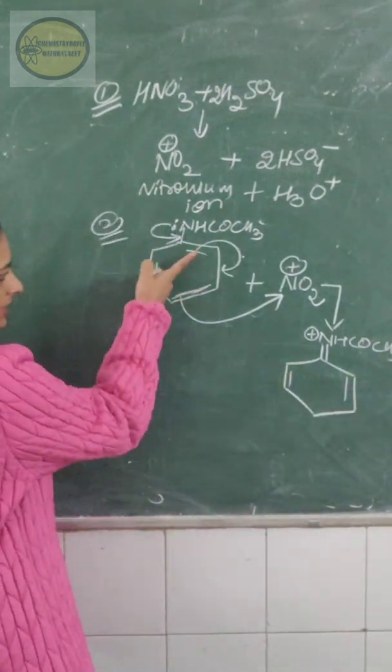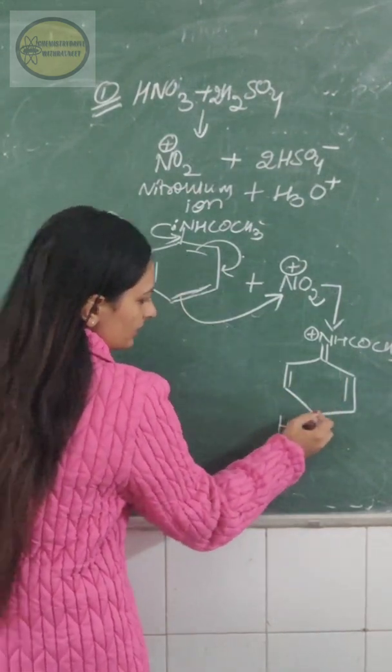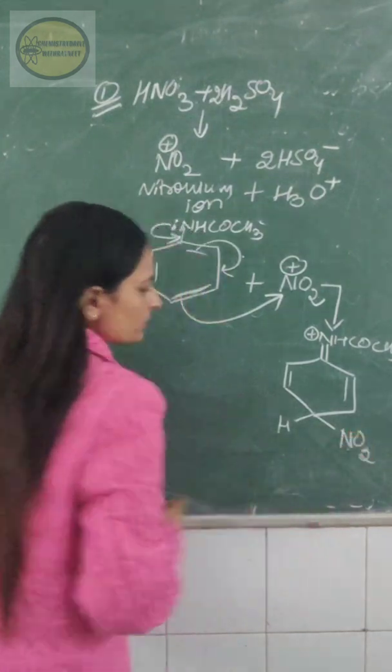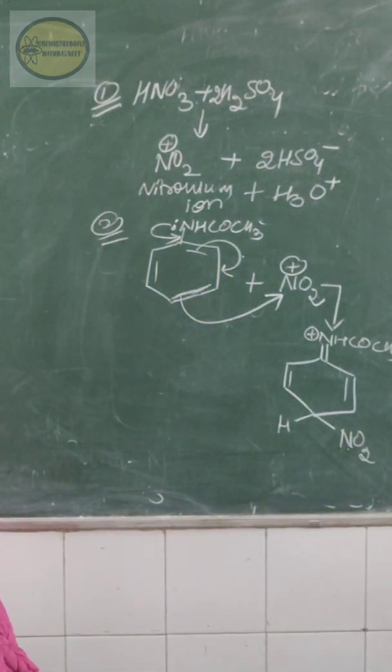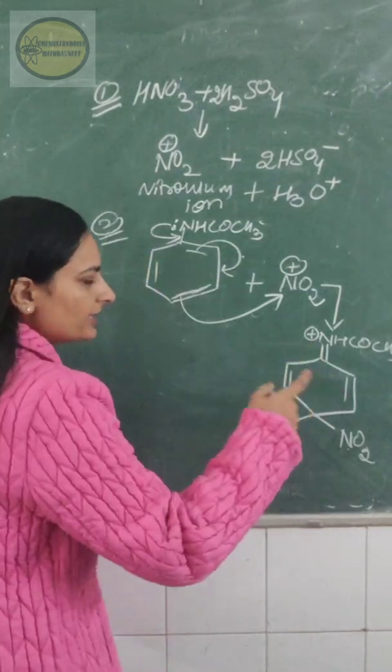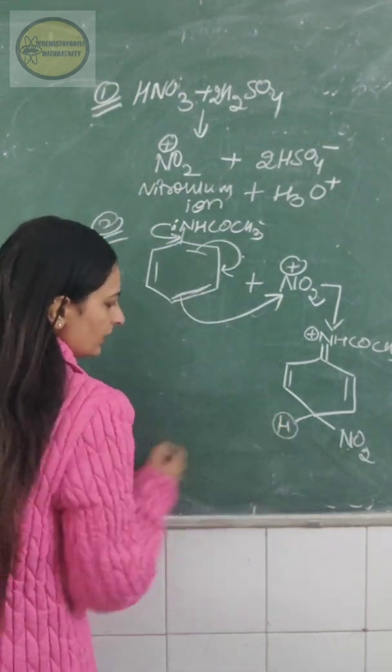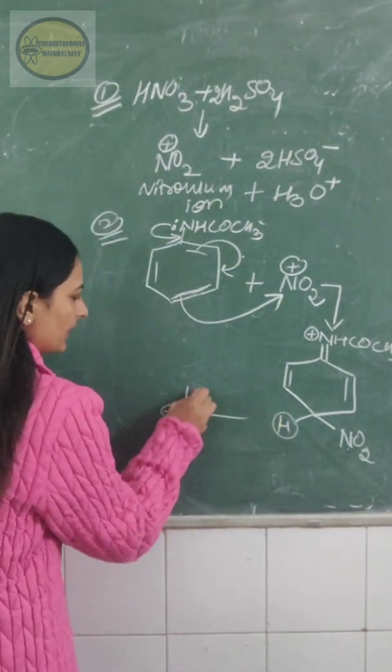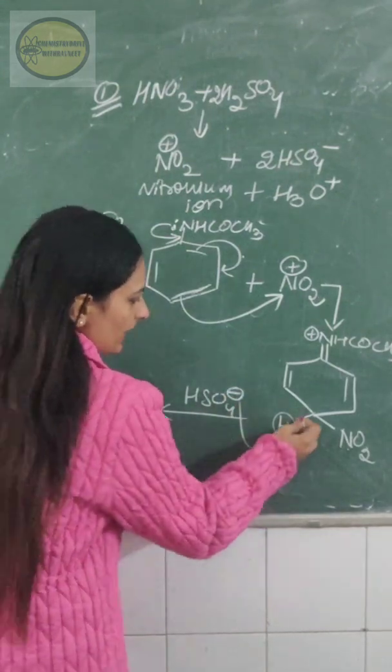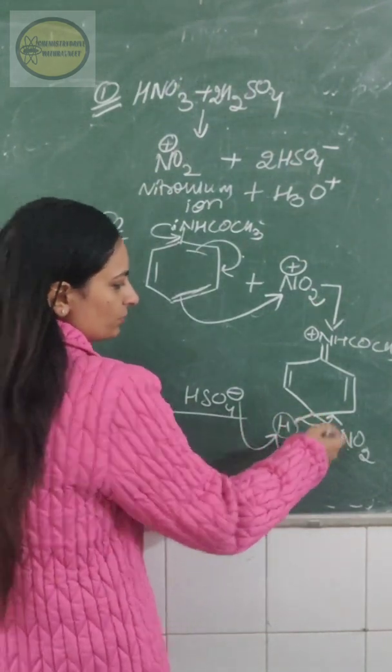Now see this pi electron density come between these carbons. And on this para position we have NO2 group. So in this way your nitro group it gets substituted. Now after this you can make the arenium ion structure. So in the last step what will happen, your this proton, it will be picked up by HSO4-. It will pick up this proton and it will complete this bond. This electron density will again shift to the ring.